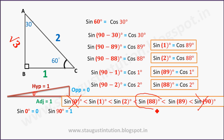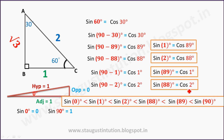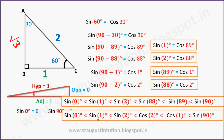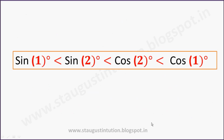Sin 88° equals cos 2°, and sin 89° equals cos 1°. So we rearrange: sin 88° = cos 2° and sin 89° = cos 1°. Using these equivalences, the ascending order is: sin 1°, sin 2°, cos 2°, cos 1°. The answer is already ordered.